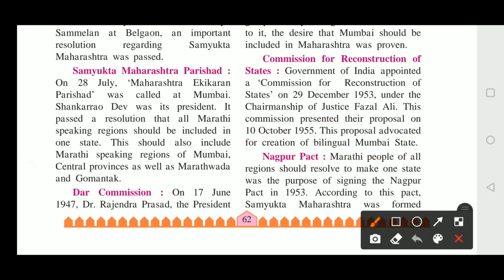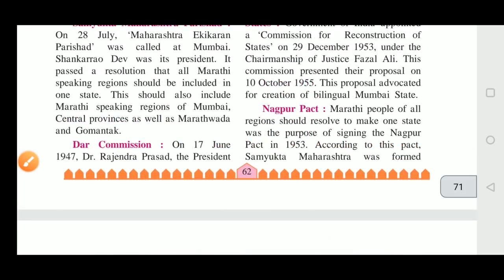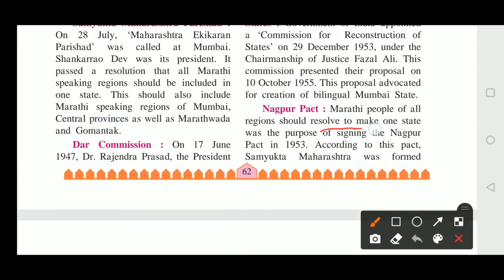Bilingual means more than one language used. The bilingual Mumbai State proposal meant that different Marathi-speaking and other regions would be added together. Nagpur Pact: The resolve to make one state for Marathi people of all regions was the purpose of signing the Nagpur Pact in 1953. Whatever Marathi speakers were in every area, all of them would be in one state.